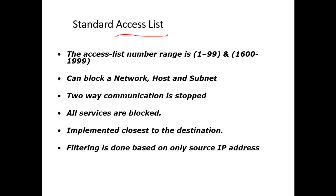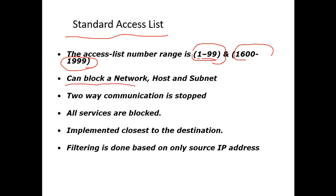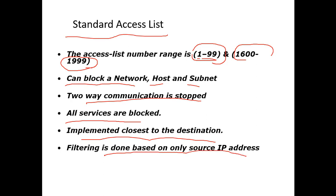Let's talk about the extended access list in detail. The standard access list starts from 1 to 99, and you can also have entries from 1600 to 1999. You can block a network, a host, or a subnet. All the services are blocked, and it is implemented closest to the destination. Filtering is done based upon only the source IP address.